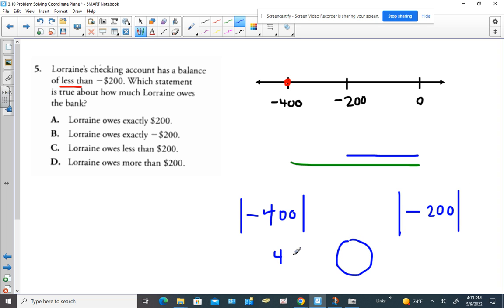So if we simplify this, that's $400 of owing, like owing $400, versus owing $200. The absolute value of negative $200 is $200.